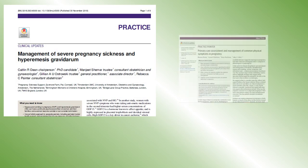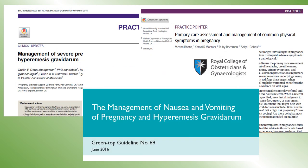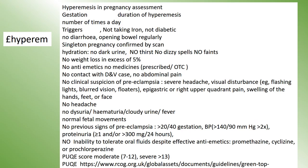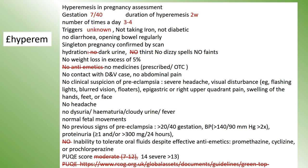I recently had cause to review some guidance on hyperemesis gravidarum. Here's my text expander for hyperemesis, and at the bottom I've got a reminder about the thresholds for considering it to be moderate or severe with the PUQE score — those I would delete when seeing a patient. Here it is filled out with an example patient.